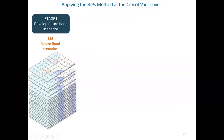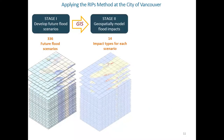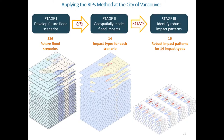In our application for the City of Vancouver, we developed 336 different future scenarios in the first stage. We then used different geospatial models to model 14 different types of sea level rise impact for each flood scenario, producing about 4,700 maps in total. All of these maps are fed into SOMs. In the last stage, we identified 16 robust impact patterns for each of the 14 impact types. But before we look at those patterns, let me talk a little bit about the flood scenarios themselves.